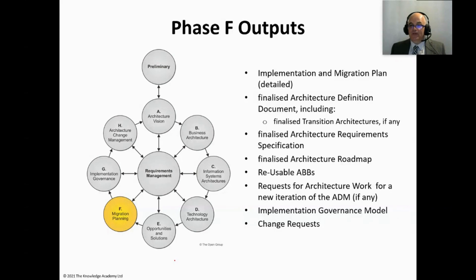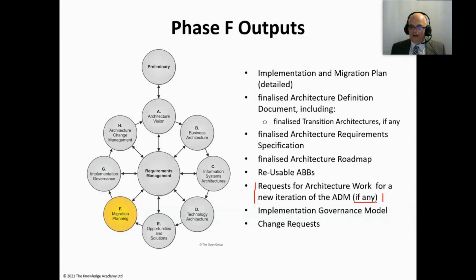Outputs of Phase F include: the implementation migration plan; the finalized architecture definition document; finalized transition documents; finalized architecture requirement specification document; and the finalized architecture roadmap — essentially everything is finalized before going into implementation in Phase G, or going back round to Phase A. The request for architecture work is only an output if going back to Phase A. Change requests are also listed as potential outputs, although these can arise from any phase.